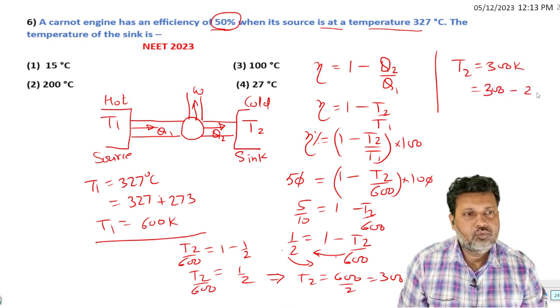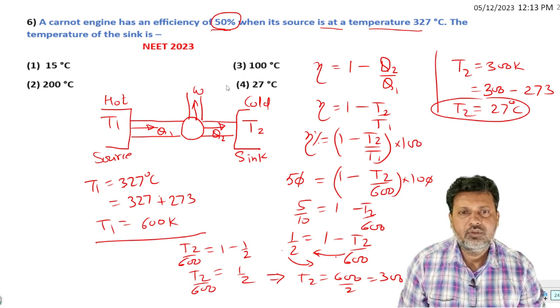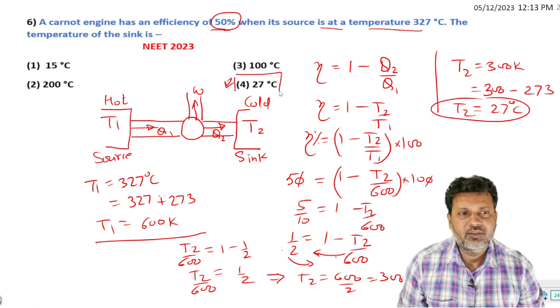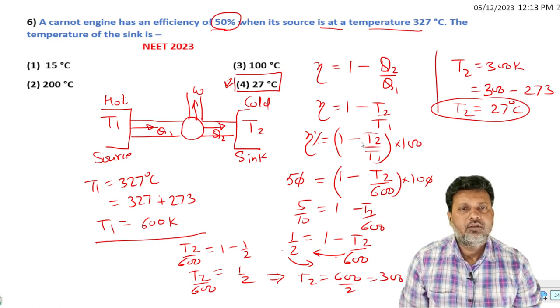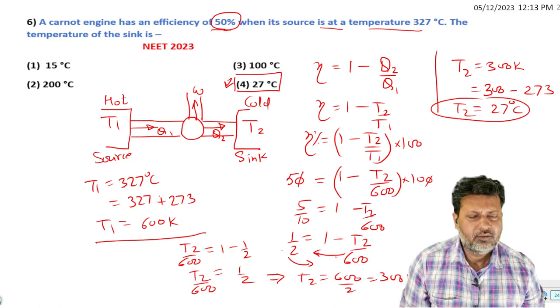300 minus 273 gives us 27 degrees Celsius. 27 degrees Celsius, option 4. This is the answer: fourth option, 27 degrees Celsius. Simple question. Next question. Thank you.